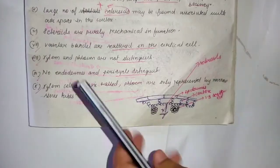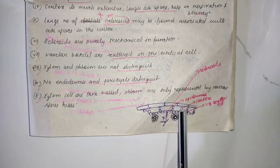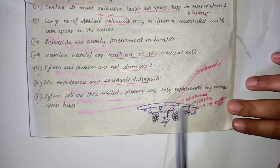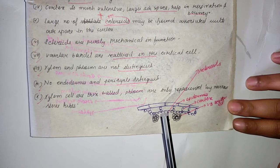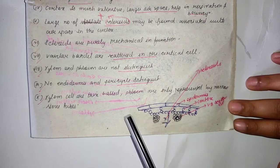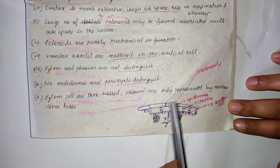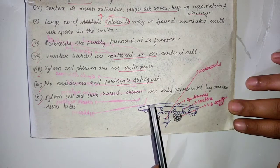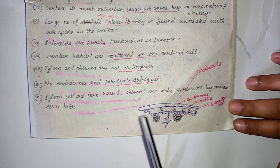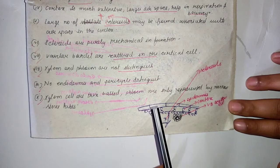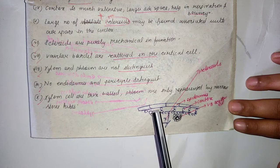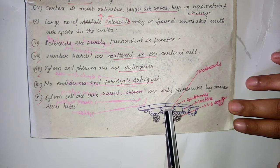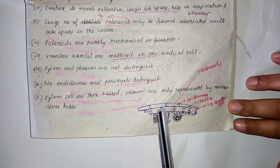This is the structure of stem anatomy of floating hydrophytes. The outer structure represents the epidermis, which is one layer in thickness. Next to the epidermis, cortex is present, which contains huge air spaces.